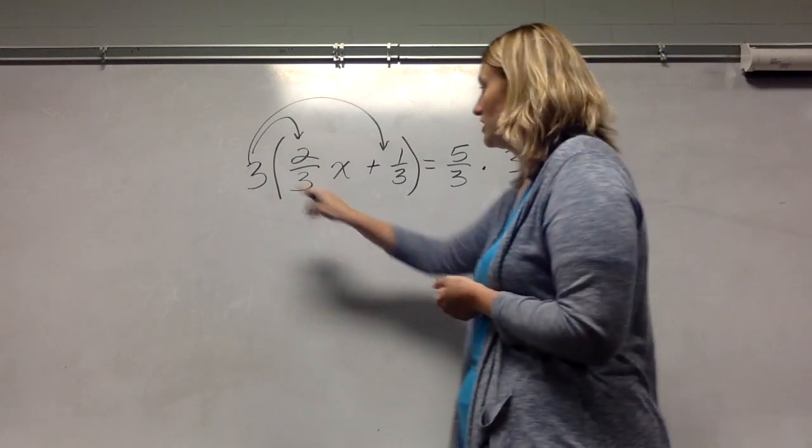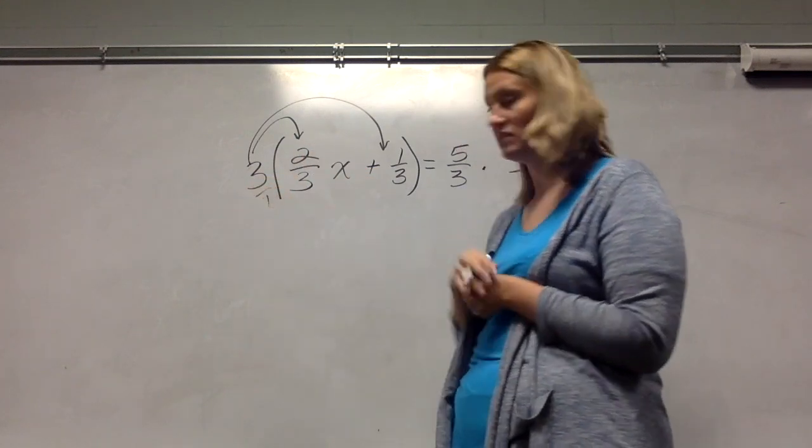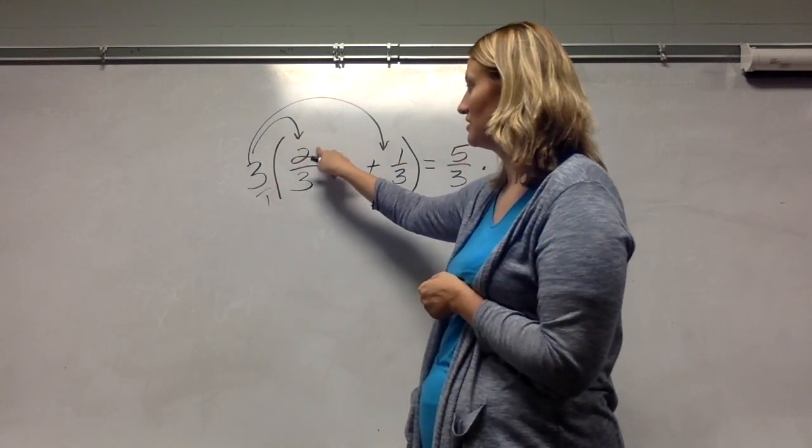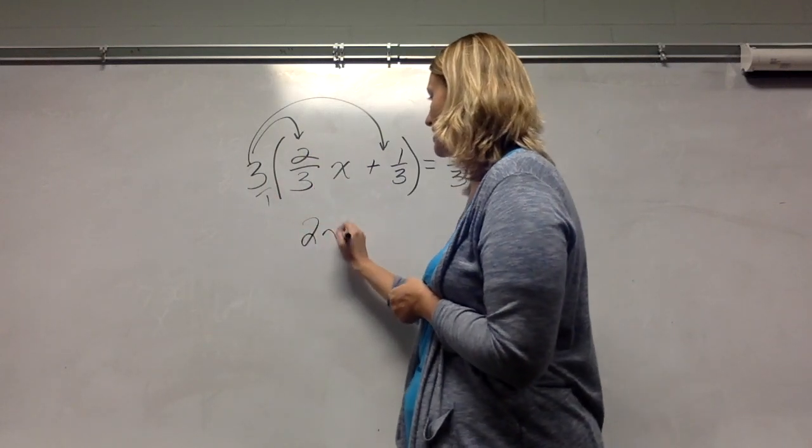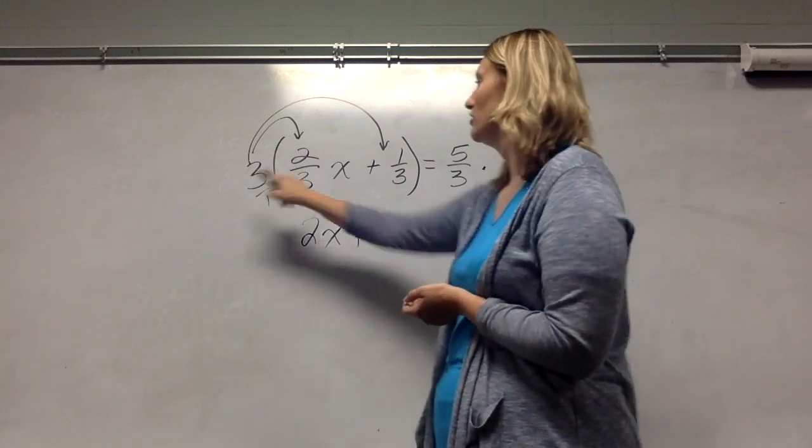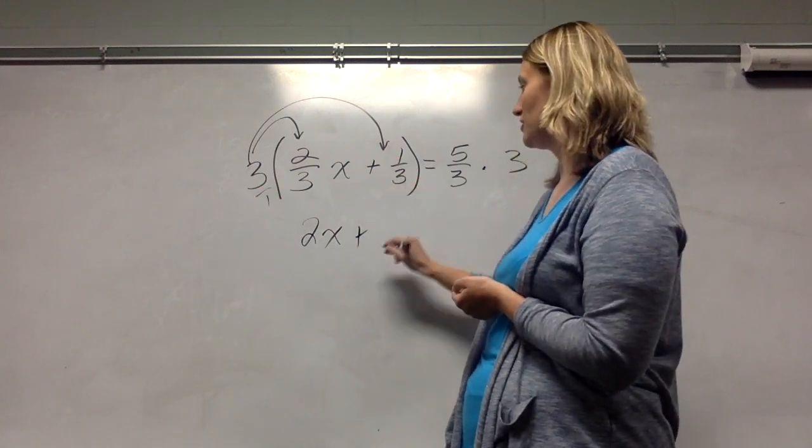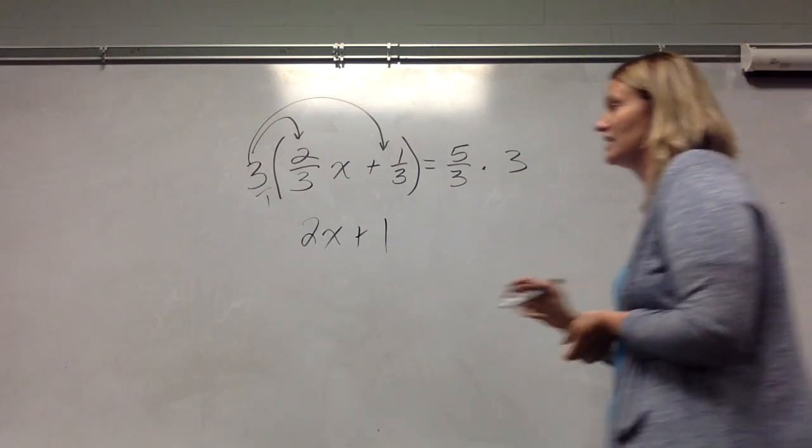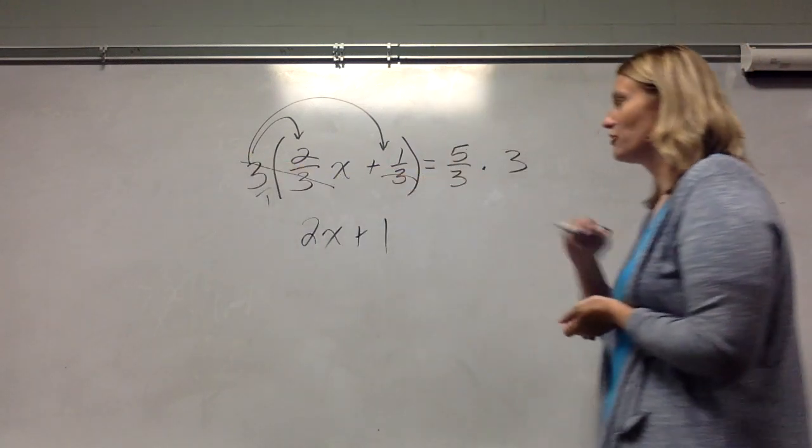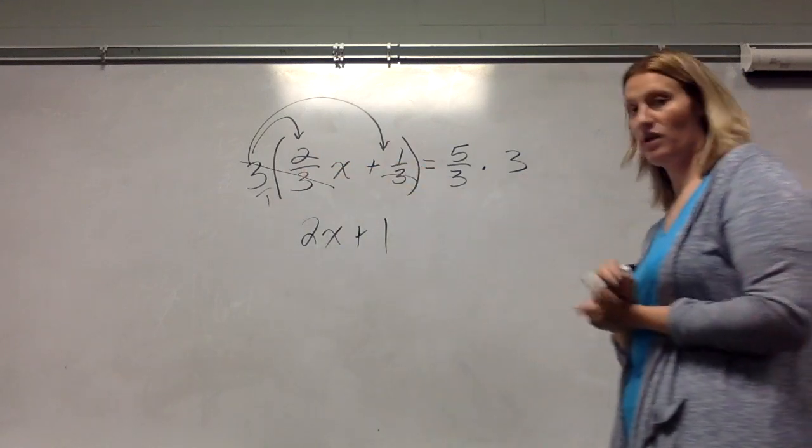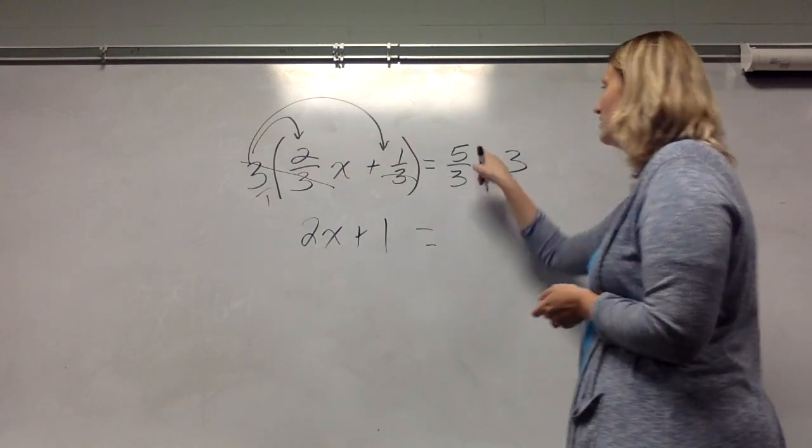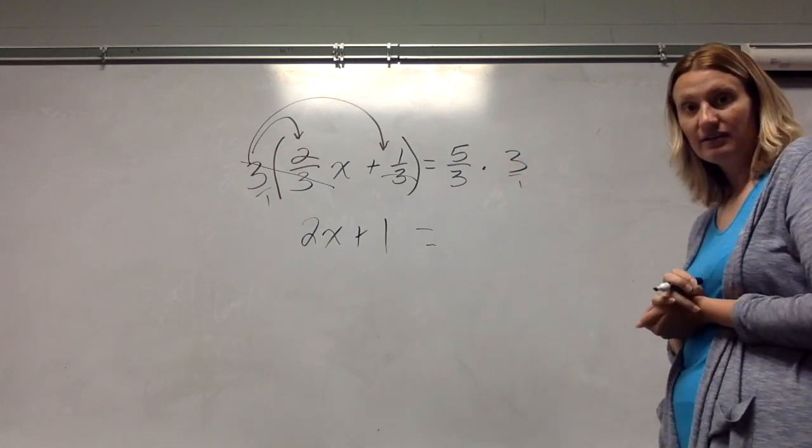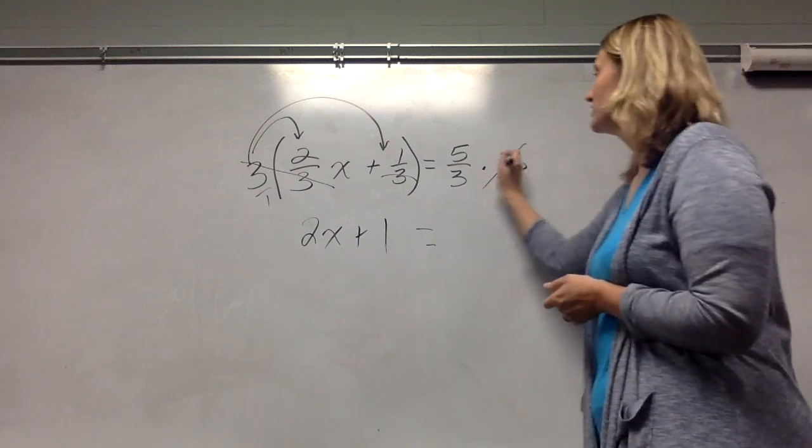A couple ways to do this. Three times two, if you think top times top, bottom times bottom. Three times two is six. Six divided by three is two. So that becomes 2x. Three times one is three. Divided by three is one. So that side becomes 2x plus one. You could also think of it as canceling. That cancels that three and that three. So I'm left with 2x and one. Now on this side, five times three is 15. Divided by three gives me five. Or, same idea, that cancels to give me five.